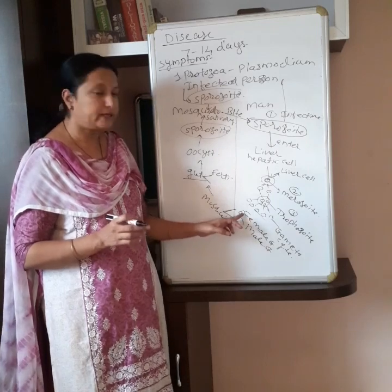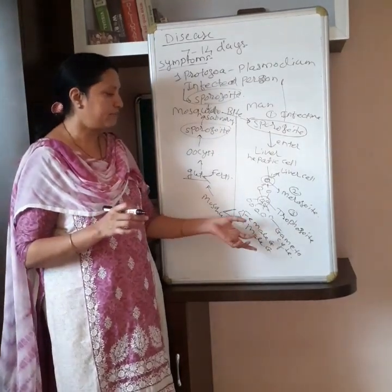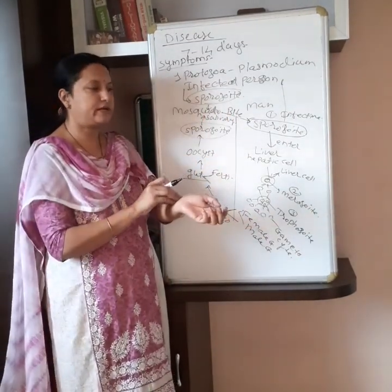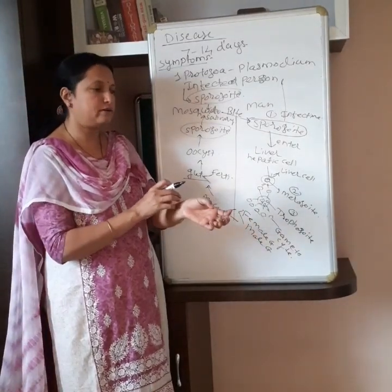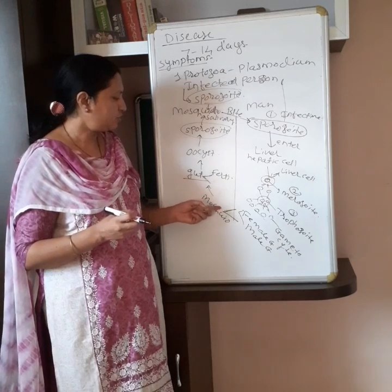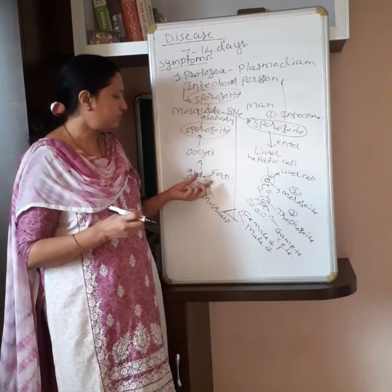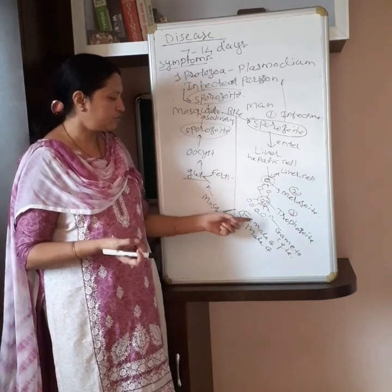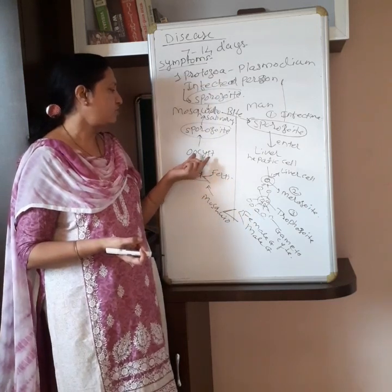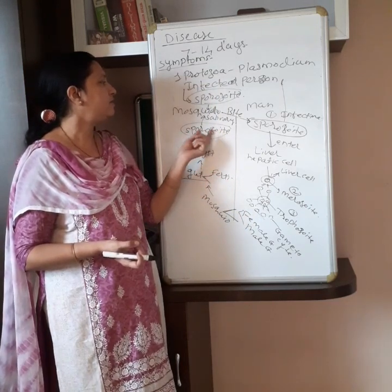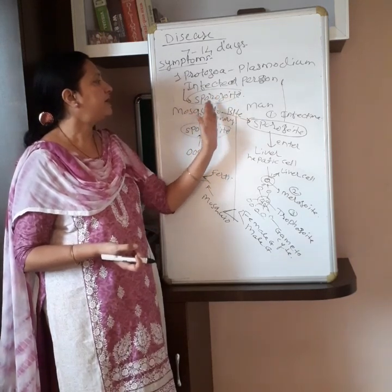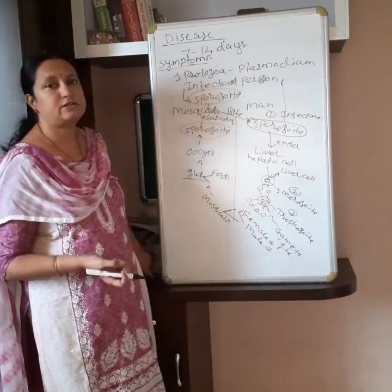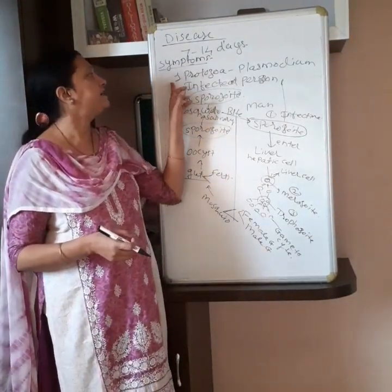The blood of the infected person has many male and female gametocytes. When a mosquito sucks the blood from the infected person, along with the blood the female and male gametocytes enter into the mosquito. In the mosquito, from the mouth they enter and go up to the gut — the alimentary canal. In the alimentary canal, there is male and female gametocyte fertilization — oocysts are formed, which develop into sporozoites. Sporozoites reach up to the salivary gland. During the bite, they enter into the person. So this is the type of infectious disease that is malaria.